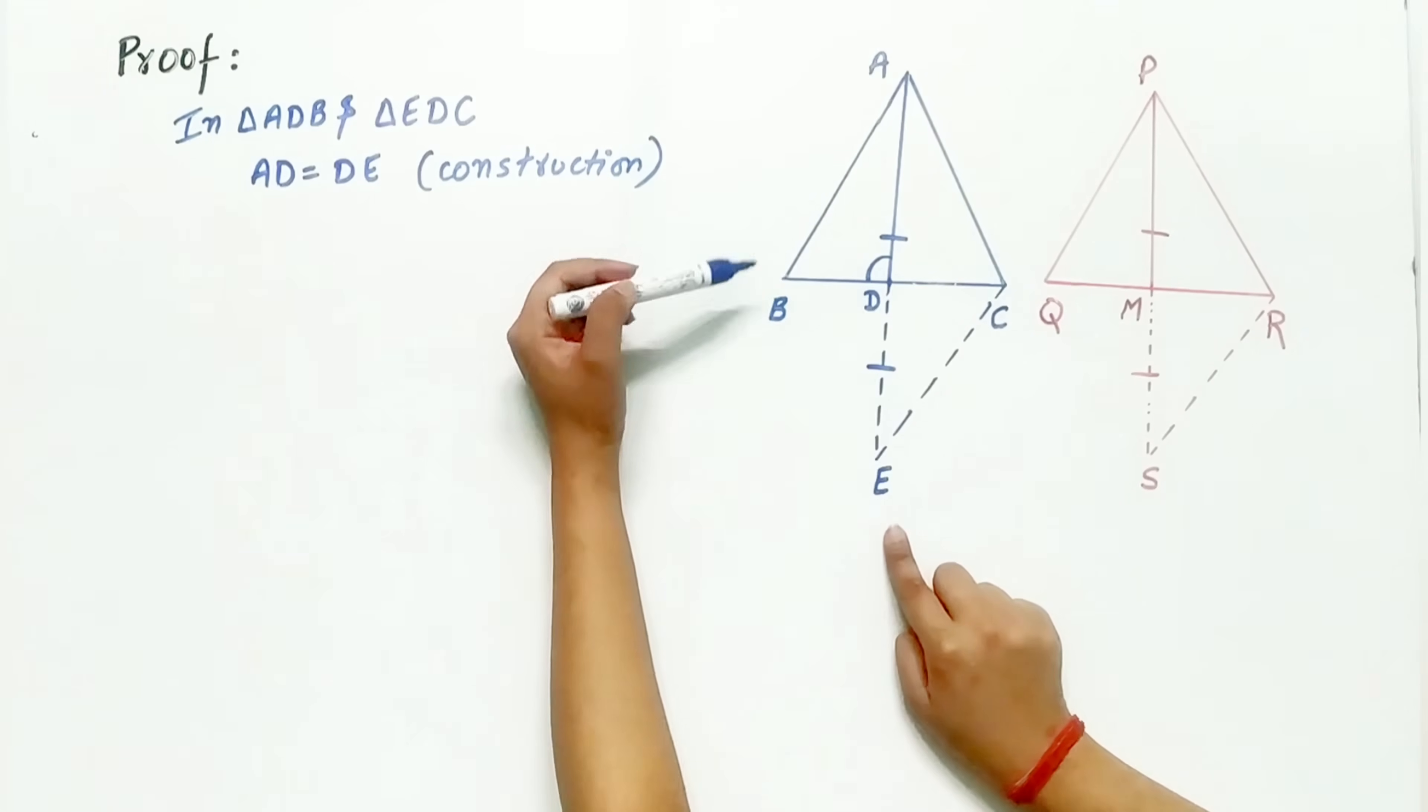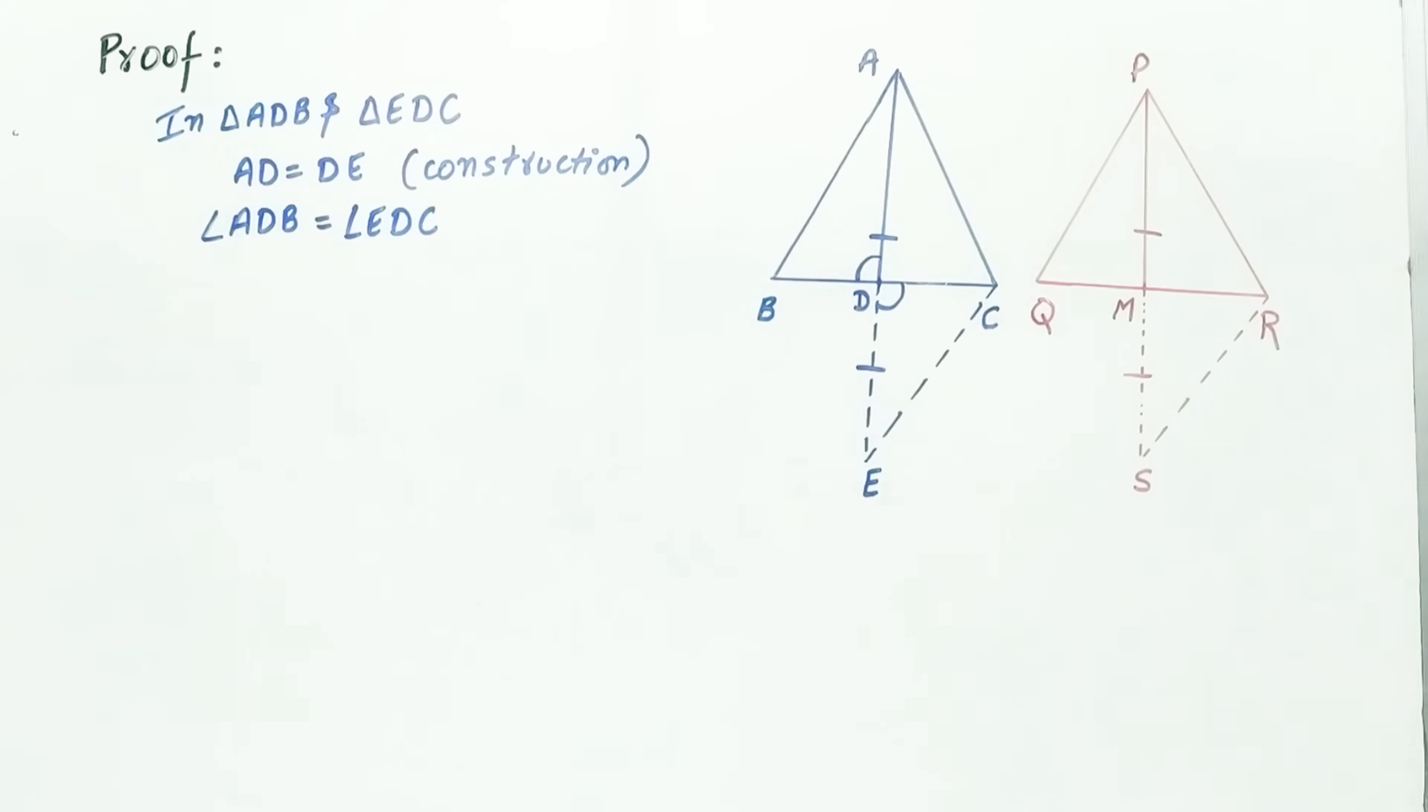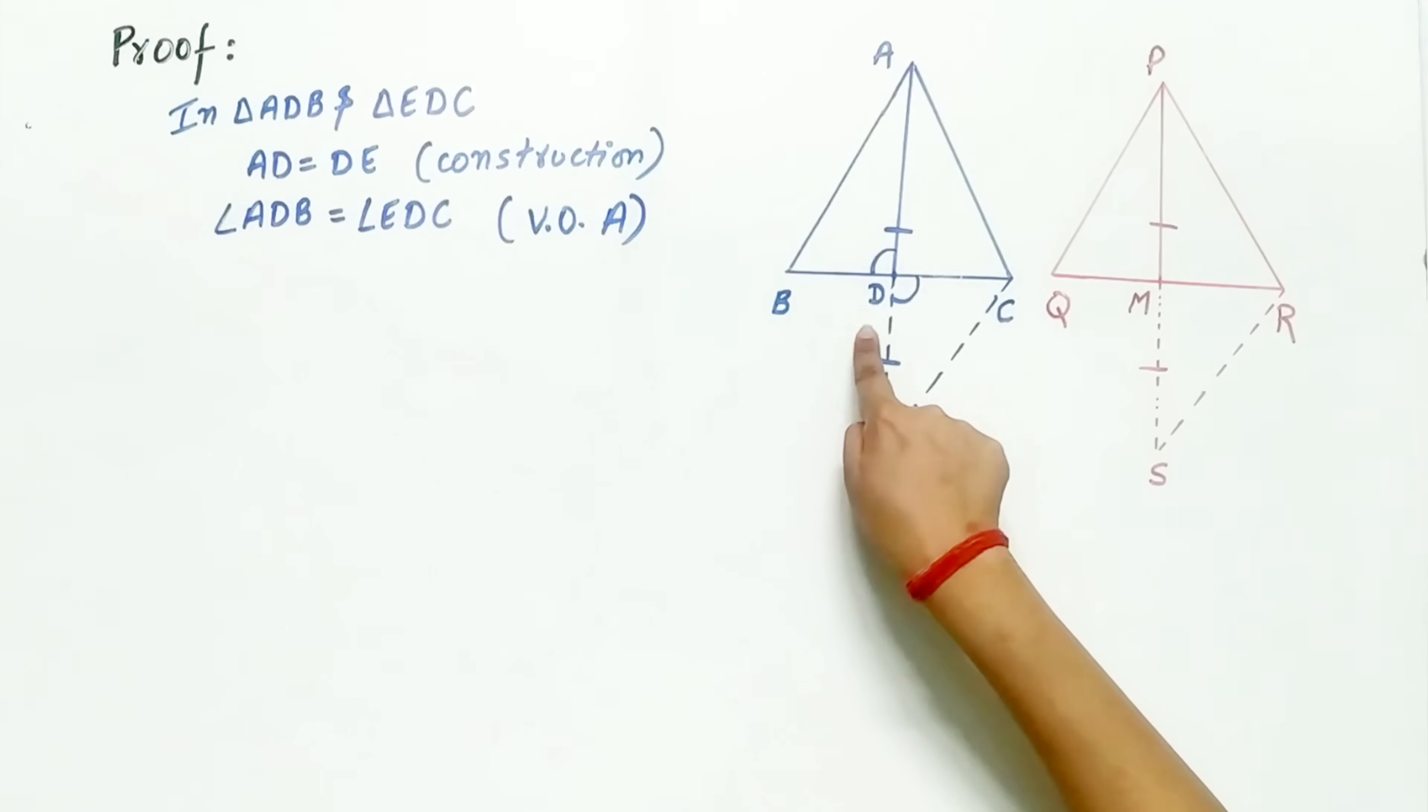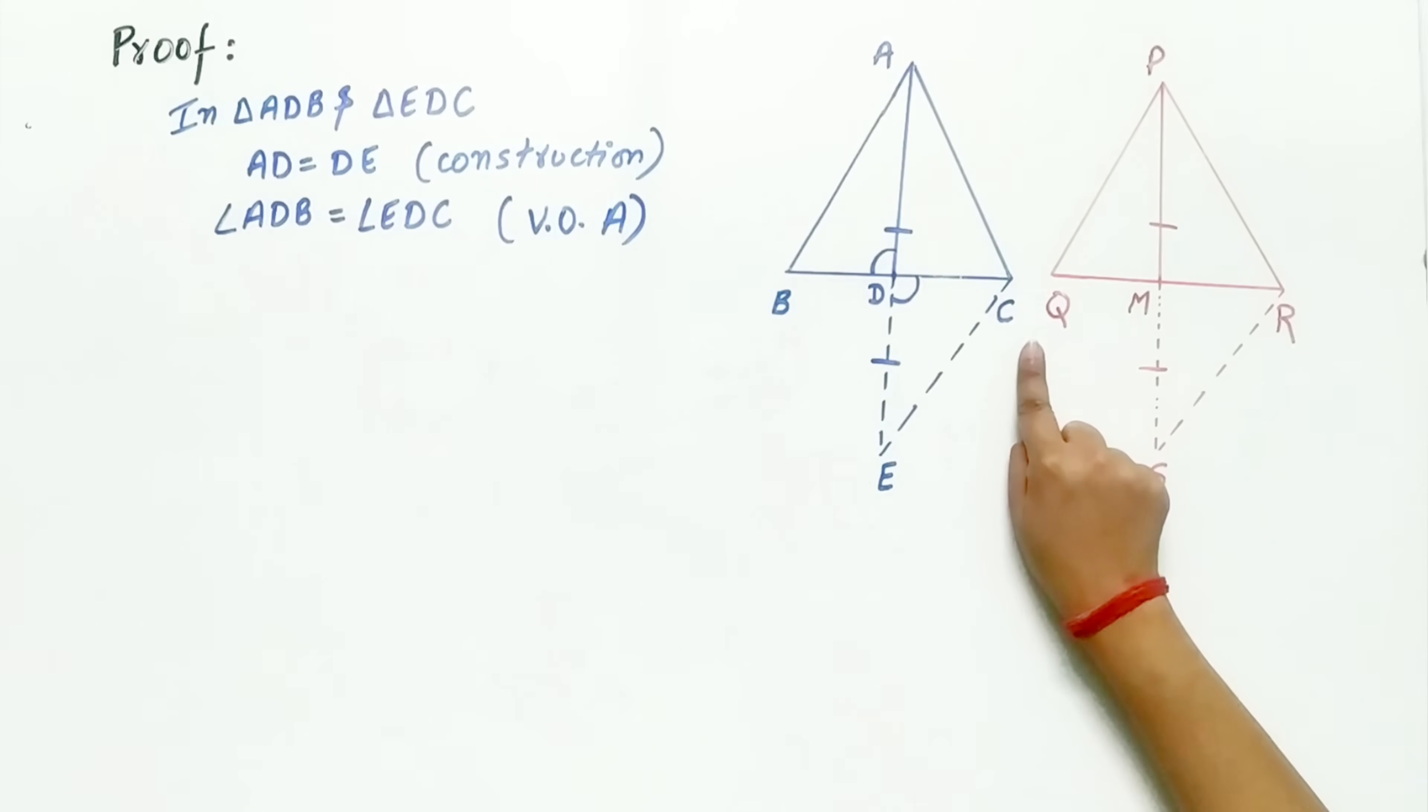Angle ADB is equal to angle EDC. Why? Because of vertically opposite angles. And BD is equal to DC. Again, why?